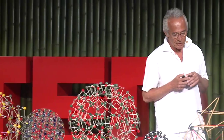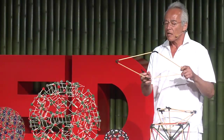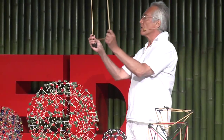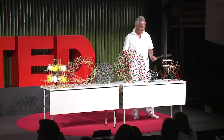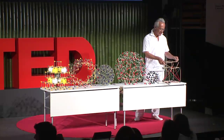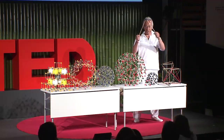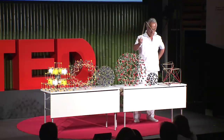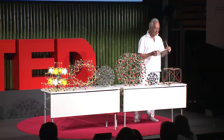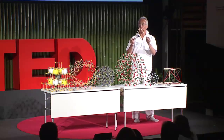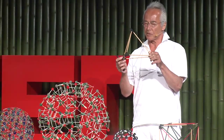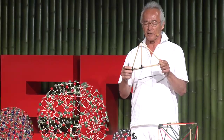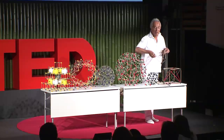As an architect, I approach the problem structurally. A square is a shape, but not a structure — because it can't keep its shape. A triangle, on the other hand, is a shape and a structure, because it can keep its shape. The tetrahedron, made of four triangles, is the simplest self-stabilizing three-dimensional structure in the universe.